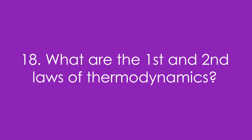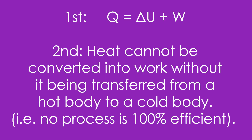Question 18: What are the first and second laws of thermodynamics? The first is Q = ΔU + W. The second can be worded: heat cannot be converted into work without being transferred from a hot body to a cold body — in other words, no process is 100% efficient; you'll always have some change in internal energy somewhere.